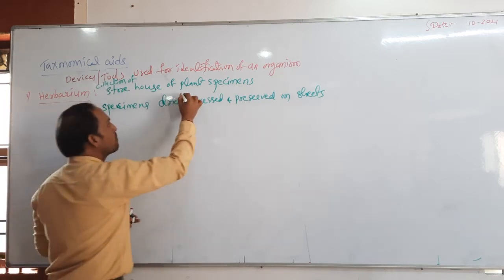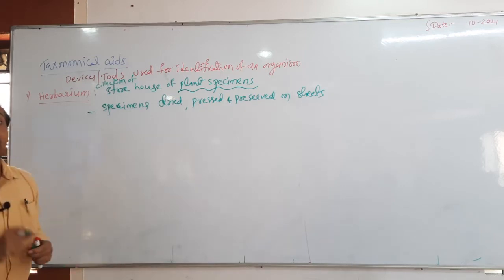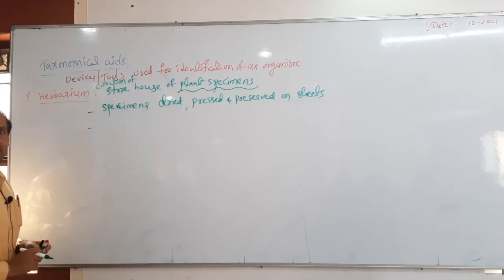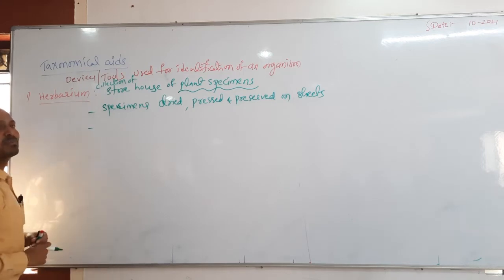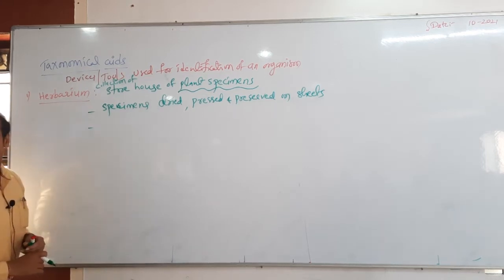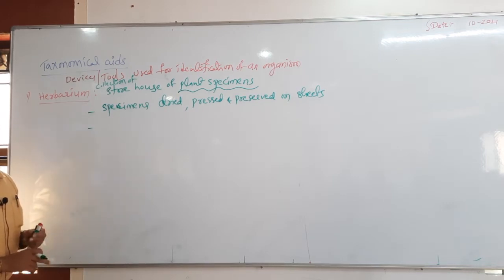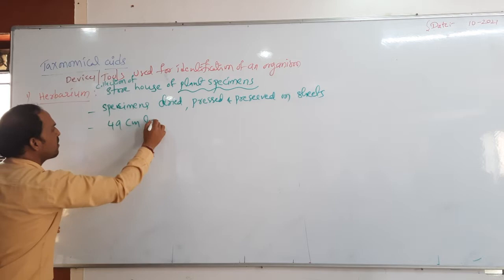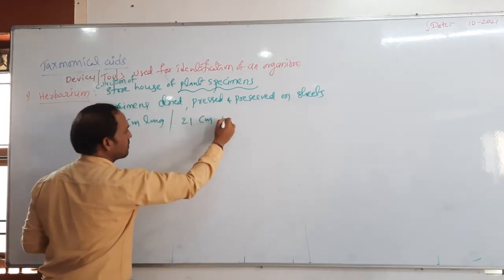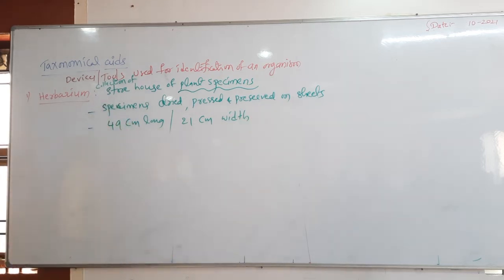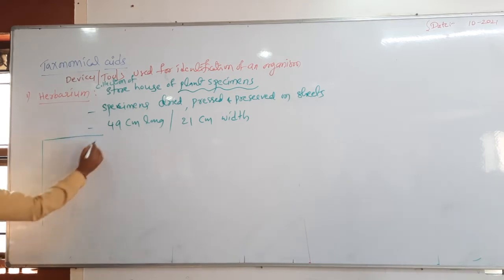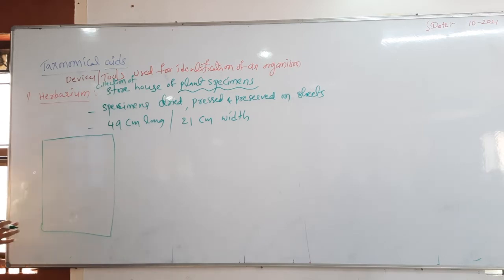Herbarium is related to plant specimens only - highlight that. Herbarium is completely used in taxonomy. The measurements for herbarium sheet are compulsory: 49 centimetres long and 21 centimetres wide.